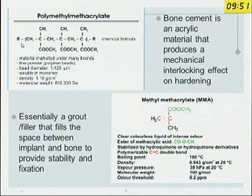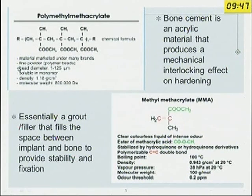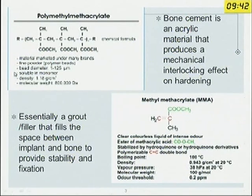Bone cement is an acrylic material that produces a mechanical interlocking effect on hardening. It is not a glue — it is a grout. It fills in the spaces and its essential components are polymethyl methacrylate and methyl methacrylate.